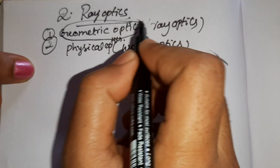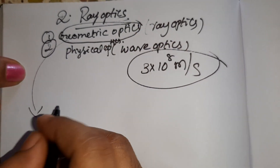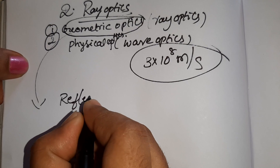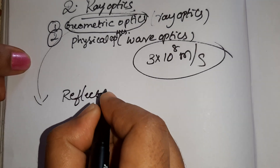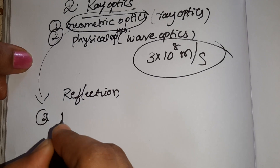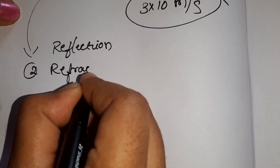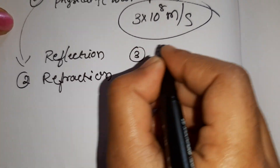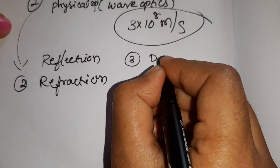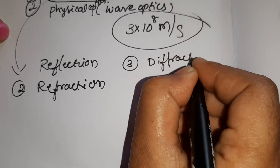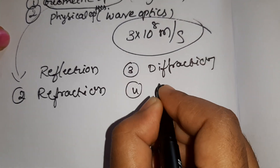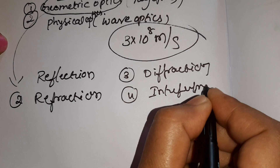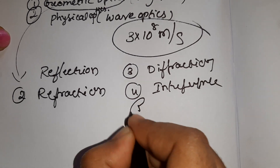Light has certain properties. The first property is reflection. The second one is refraction. The third one is diffraction. The fourth one is interference, and the fifth is polarization.